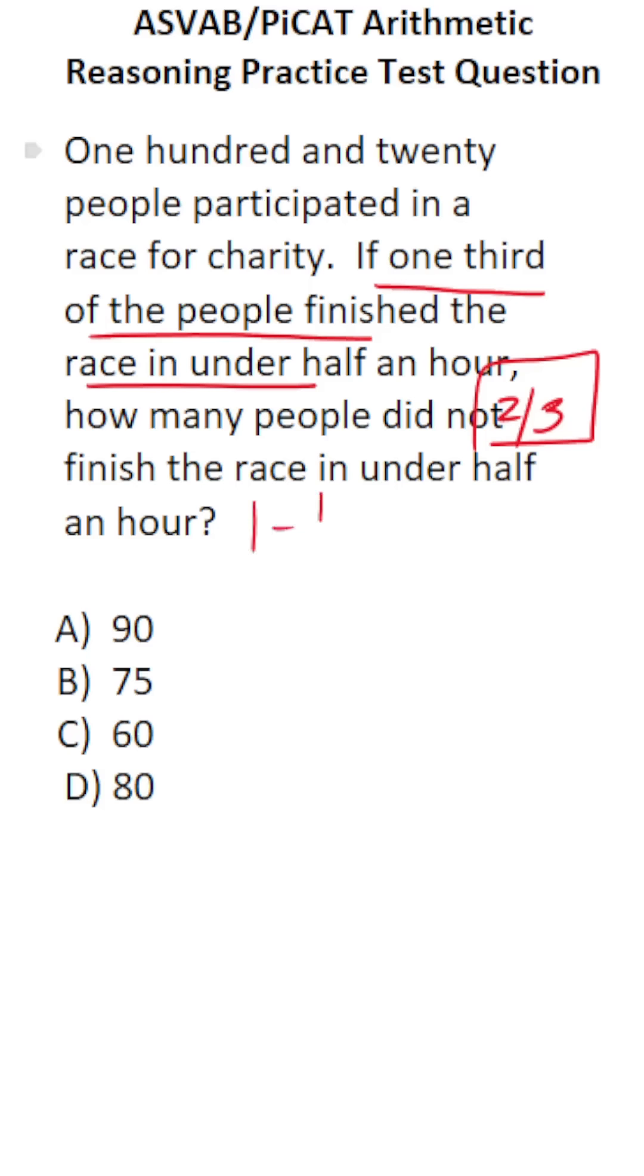That said, if you need to see it, do one minus one-third. One could be written as the fraction three over three minus one-third, and that's how you get your two-thirds.